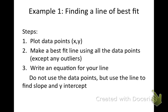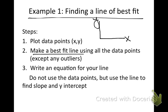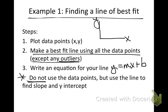Here is how we're going to find our best fit line. Example one. First, you're going to plot your data points, your x and y coordinates. You're going to make your best fit line using all the data points, except we're not going to use those outliers. You're going to write an equation for your line using y equals mx plus b. This is the important part: we do not use the data points, but we use the line to find the slope and the y-intercept.